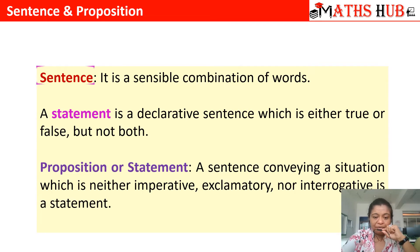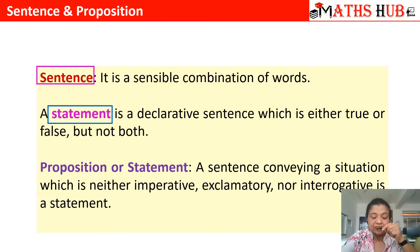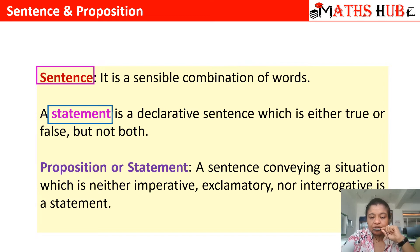The difference is that a sentence is just a sensible combination of words — a sentence can be true and false at the same time. It might happen that whatever you are saying, somebody may agree and some may not agree. But when we are talking about a statement, it is always either true or false.